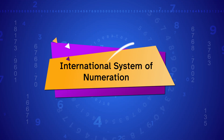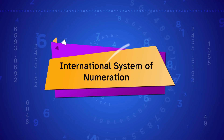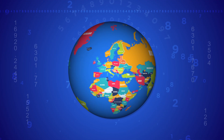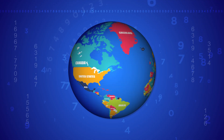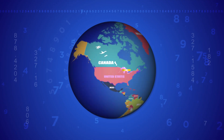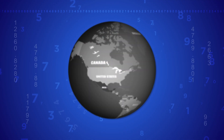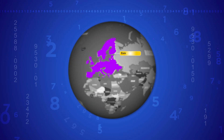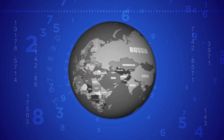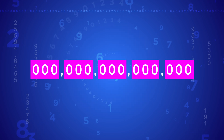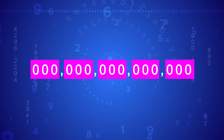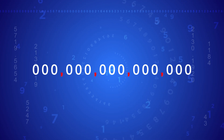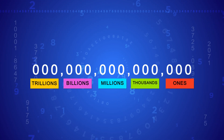The International System of Numeration is used in many countries around the world, like the United States, United Kingdom, European nations, and including India. It is based on groups of three digits separated by commas, and each group has its own name.